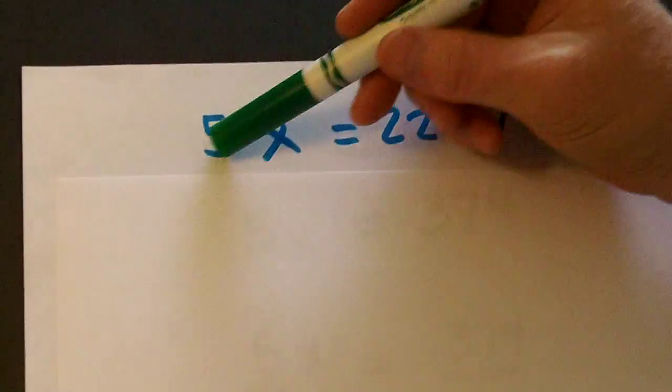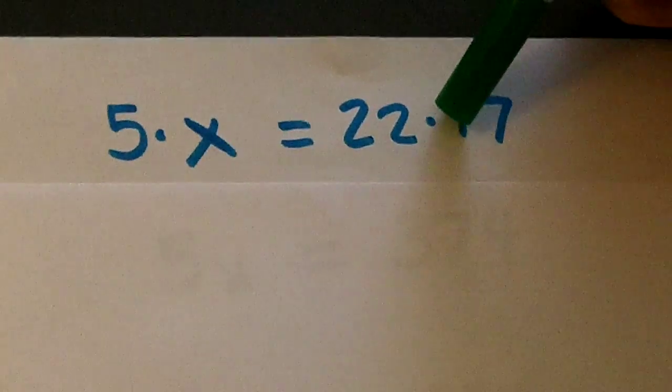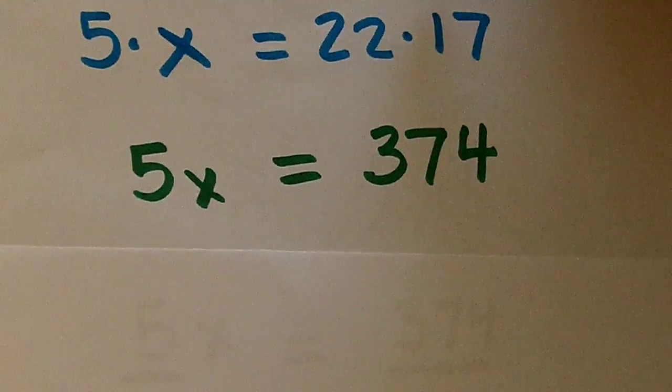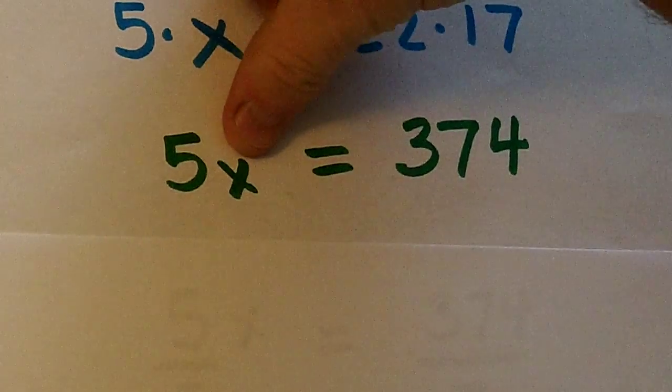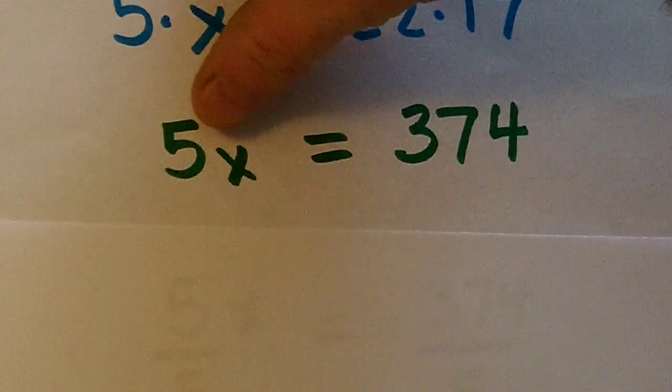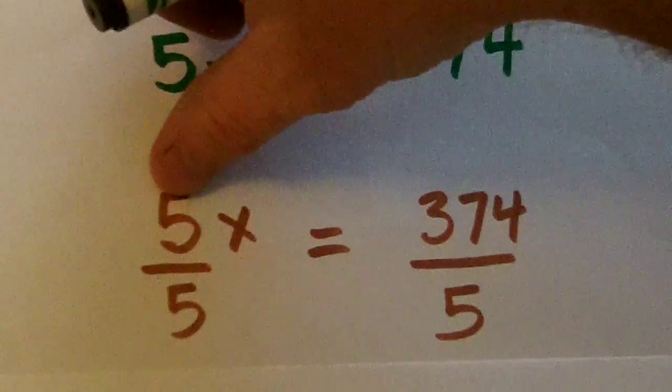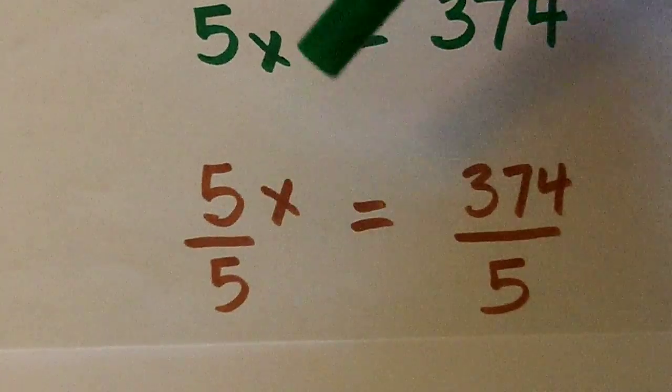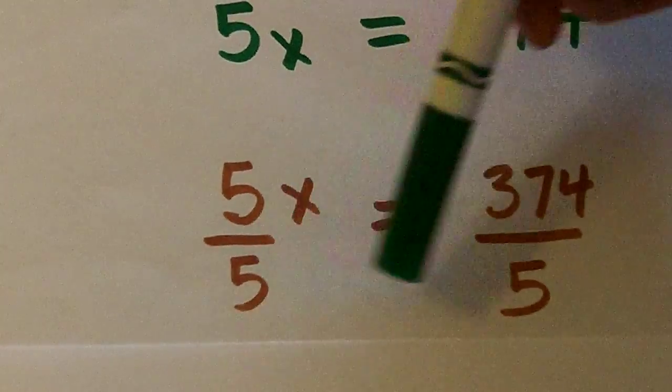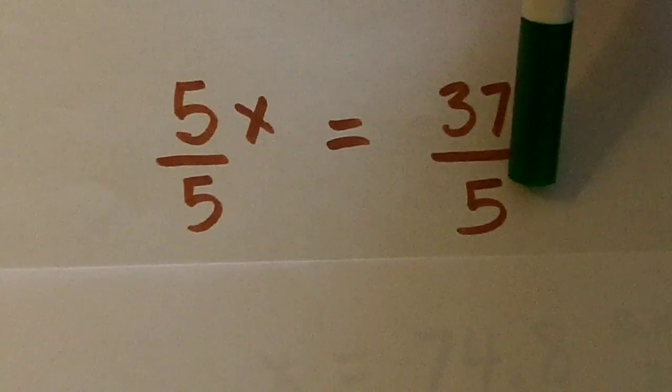Now, if we want to try to compute that, five times X is equal to 22 times 17. When we multiply, we get 5X is equal to 374. To get X by itself, we have to divide this side by five. Five divided by five is one, one times X is X. But we have to divide both sides by five.